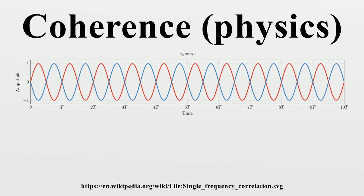The precise definition is given at degree of coherence, coherence and correlation. The coherence of two waves expresses how well correlated the waves are, as quantified by the cross-correlation function. The cross-correlation quantifies the ability to predict the phase of the second wave by knowing the phase of the first. As an example, consider two waves perfectly correlated for all times — at any time, the phase difference will be constant. If, when combined, they exhibit perfect constructive interference, perfect destructive interference, or something in between but with constant phase difference, then they are perfectly coherent. The second wave need not be a separate entity; it could be the first wave at a different time or position. In this case, the measure of correlation is the autocorrelation function.